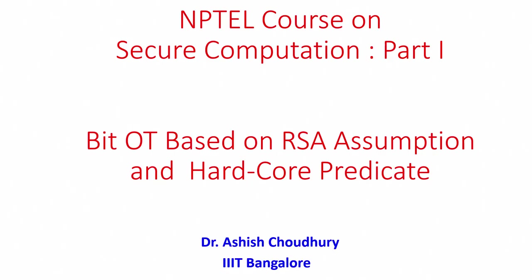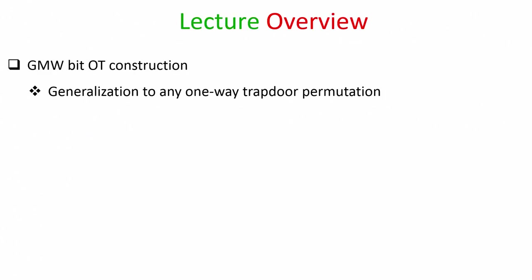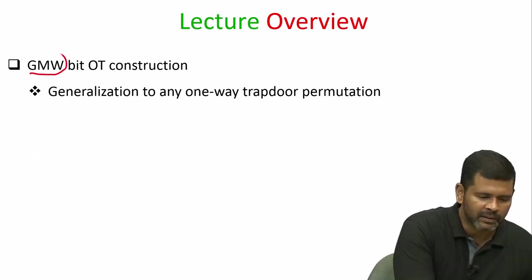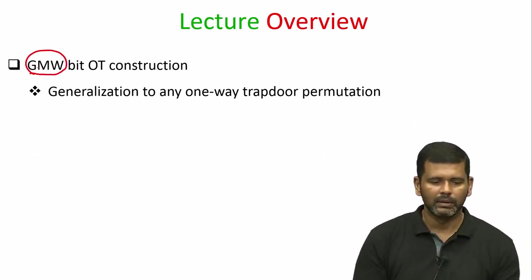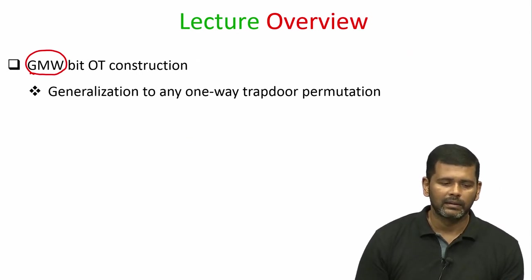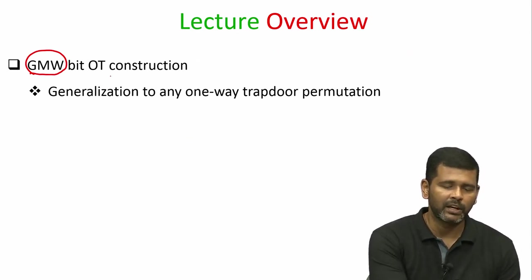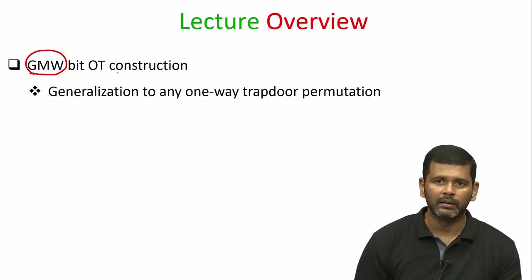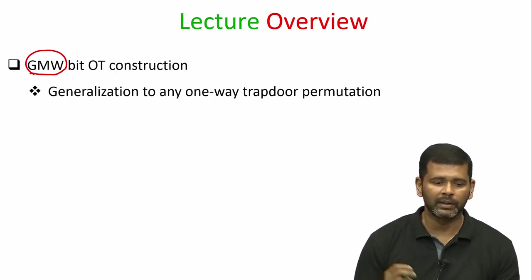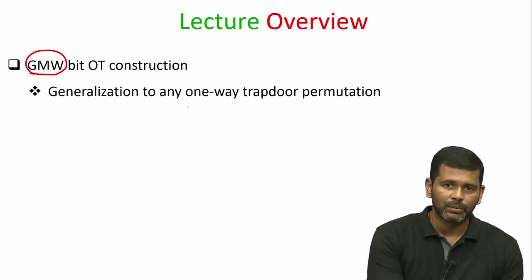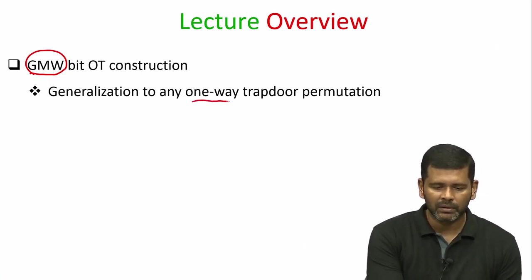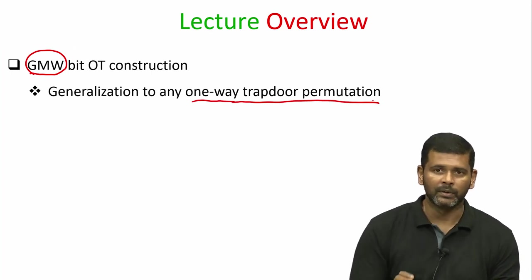Hello everyone, welcome to this lecture. In this lecture we will see the construction of bit OT based on the RSA assumption — this is the OT construction given in the GMW paper itself. Then we will see how this specific instantiation of OT based on the RSA assumption and RSA hardcore predicate can be generalized to an OT construction based on what we call a one-way trapdoor permutation.